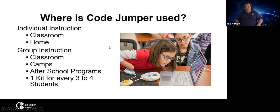Where is Code Jumper used? We have individual use — kids can take a kit home and use it themselves for individual instruction, including the classroom or home. We also have group instruction, classroom camps. One exciting thing I got to do two summers ago was watch students come in and play with it during a School for the Blind camp in Kentucky. We had kids from five all the way up to 12. The five-year-olds liked turning the dial and hearing a noise; the older kids started learning about if-this-then-that, looping, etc. We also see this in after-school programs such as coding clubs. We recommend one kit for every three to four students when used in group activities.